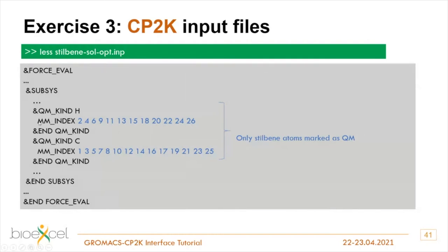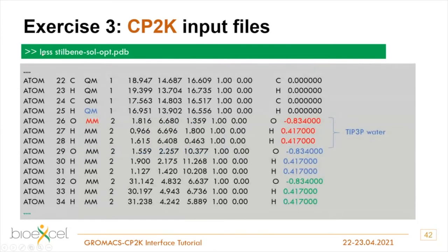In the topology section there is a PDB file from which CP2K picks up the point charges, reading from the extended beta field starting at column 81 in the PDB file. Looking at the stilbene input, only the atoms belonging to stilbene are marked as QM atoms; everything else is treated as MM atoms. The PDB file shows a split between residue names 'QM' and 'MM', and you can see that all QM atoms have zero point charge, while water molecules have the TIP3P point charges.